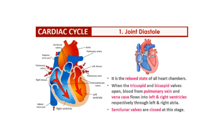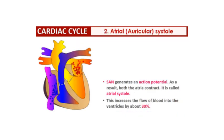Diastole is the relaxed state of all heart chambers. When the tricuspid and the bicuspid valves open, the blood from the pulmonary vein and the vena cava flows into the left and right ventricles respectively through the left and the right atrium. At this time the semilunar valves are closed. This is called joint diastole.